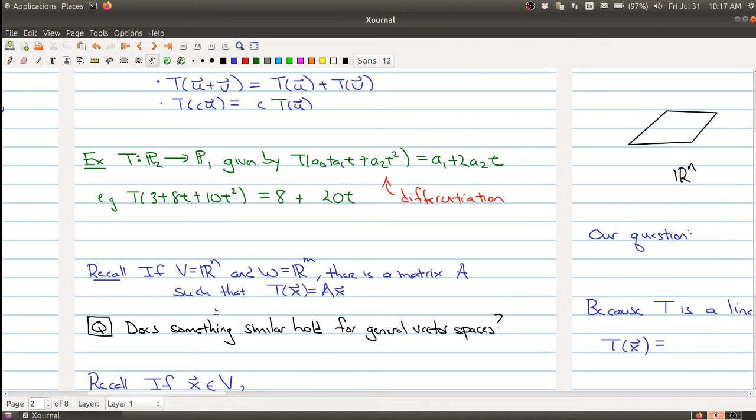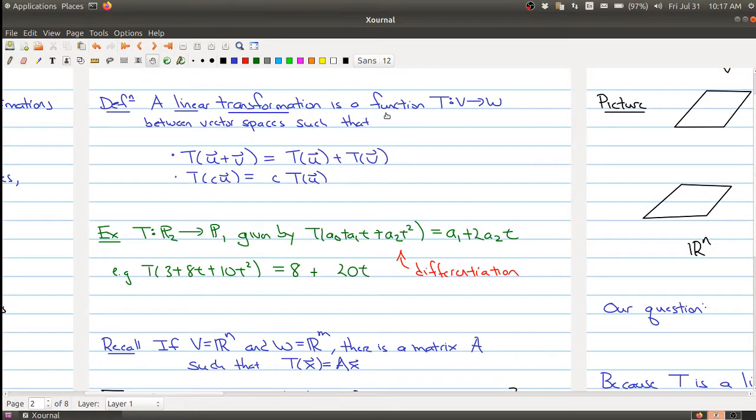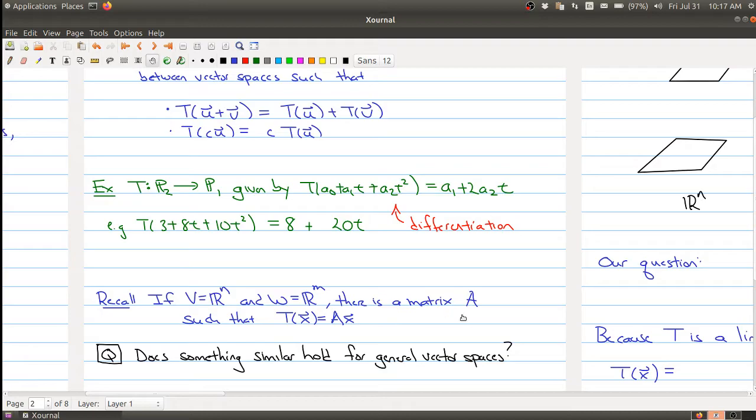Now when V and W are R^n, we proved that there's a matrix A that you can represent the linear transformation as a matrix multiplication. So the question is: does something similar hold for general vector spaces?